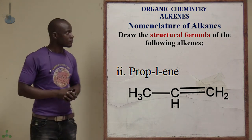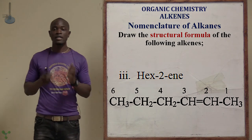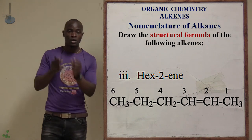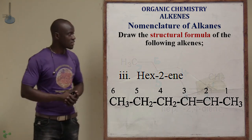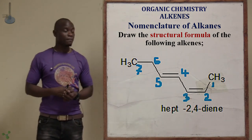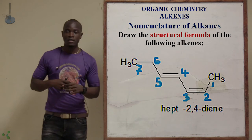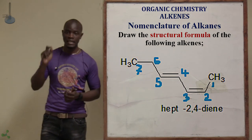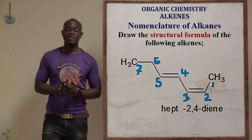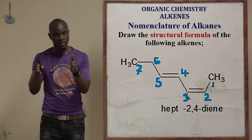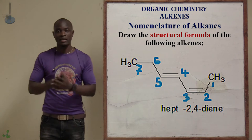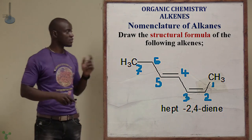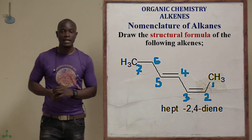For hex-2-ene, the double bond is found immediately after carbon number 2. For hept-2,4-diene, the first double bond is after carbon 2 and the second is after carbon 4. That gives the structure of hept-2,4-diene.